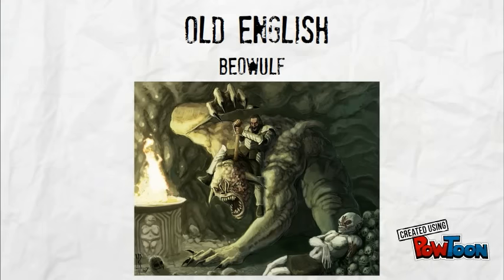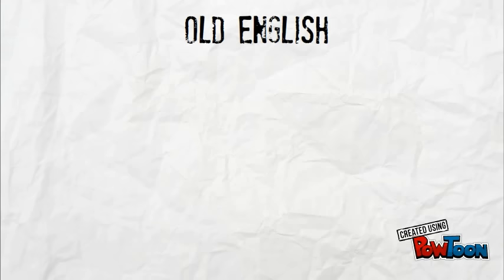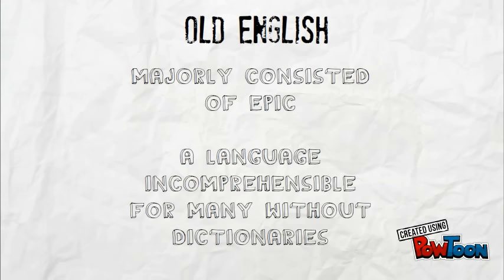Beowulf is a poem about a Scandinavian warrior and his quest to defeat a monster known as Grendel, as well as a few more story branches including his rise to the position of a king and his death. In conclusion, Old English literature consisted largely of epics or heroic poems, and do note that the language of Old English is difficult to understand without the usage of special Old English dictionaries.